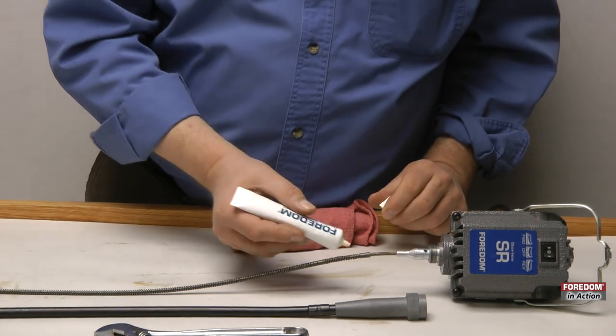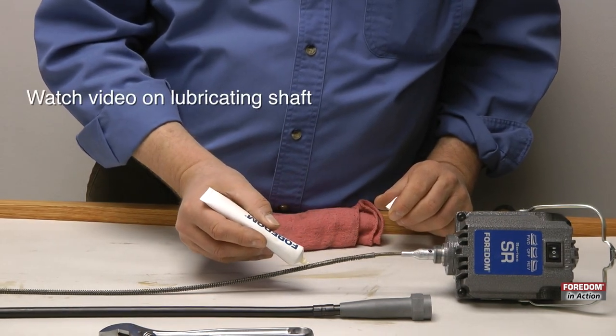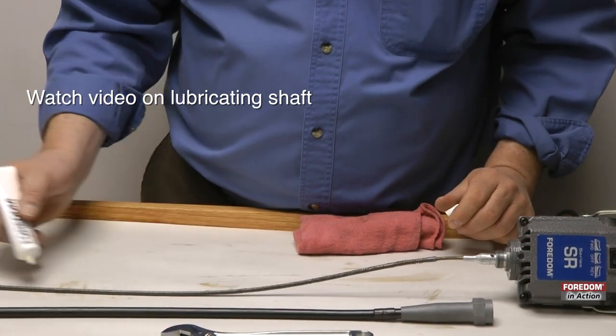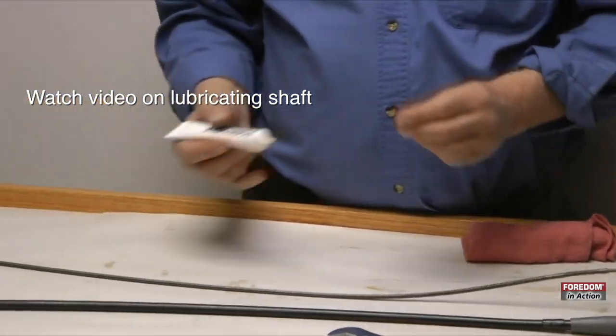Take your shaft grease and make a thin bead down, it doesn't have to be continuous, down your shaft, down to about 6 to 8 inches from the bottom.